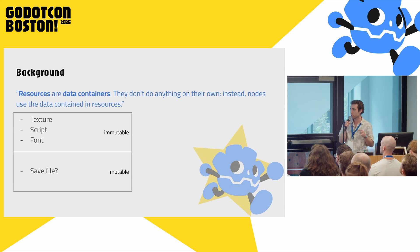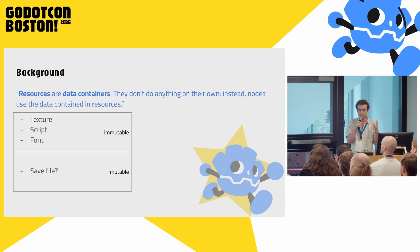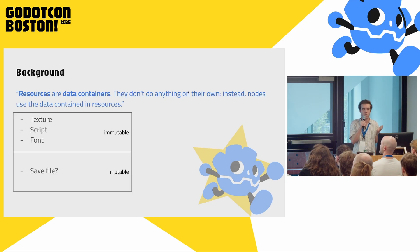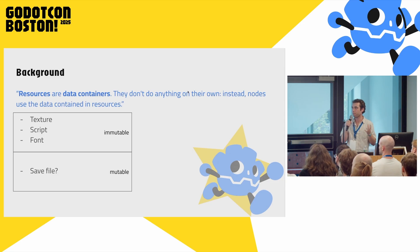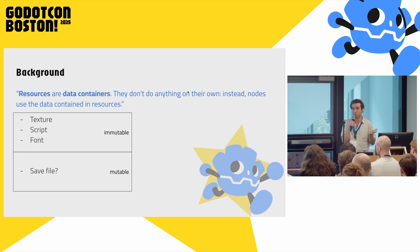So what is a resource? From the Godot documentation, resources are data containers. They don't do anything on their own — instead, nodes use the data contained in resources. You're probably familiar with some types of resources, such as textures, scripts, and fonts. For many developers, the first time you consider making a custom resource is when it comes time to have a save file for your game. One big difference between textures, scripts, and fonts versus save file data is that the first three types are often immutable. Your game probably isn't editing fonts at runtime — but your save file is changing over time.